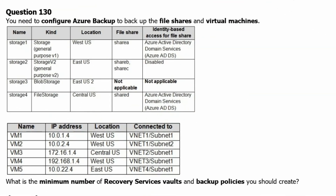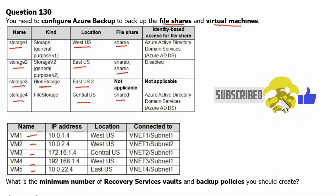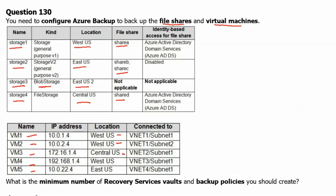You need to configure Azure Backup to back up file shares and virtual machines. We have storage accounts Storage 1, Storage 2, Storage 3, and Storage 4, located in different regions, with file shares in three accounts and one blob storage. We also have virtual machines VM1 through VM5 with different IPs across different locations. The question is: what is the minimum number of recovery service vaults and backup policies you should create?